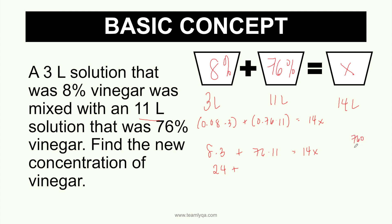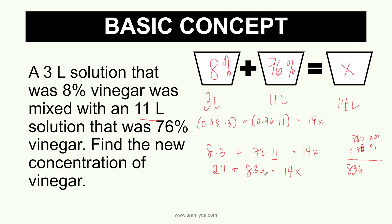76 times 11 is 760 plus 76 — that's just times 10 plus times 1 since it's times 11. That's a suggestion if you want to do mental math. You take 40 from 796 to make 800, so you have 800, and the remaining becomes 36. So you have 800 plus 36 is 836. Add 24 to get 860. It's equal to 14x. Divide both sides by 14 and you'll get the answer.